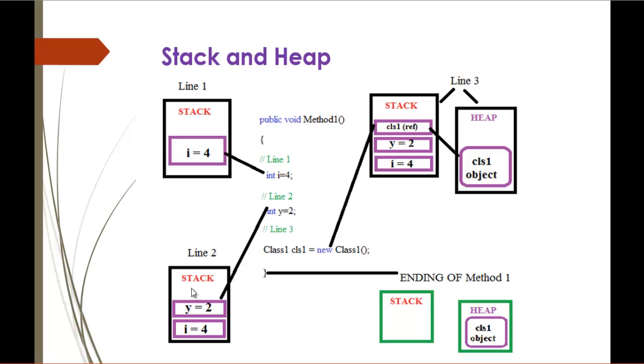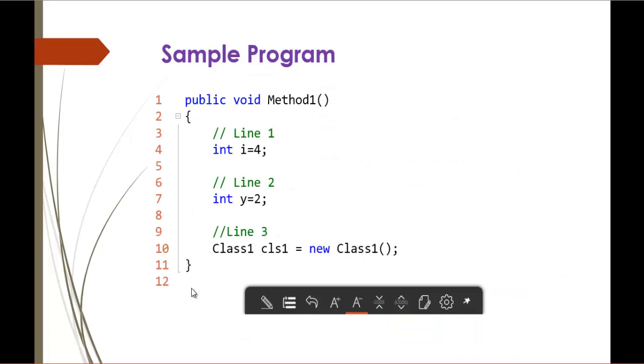And coming to the third line, I have created a class, class1, and the variable name is cls1. When we create new, it becomes an object. Now we are creating an object of class1. This is how you create an object: Class1 cls1 equals new Class1, and cls1 is the object of this class.